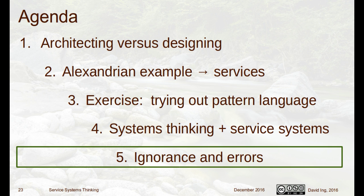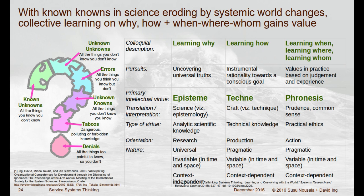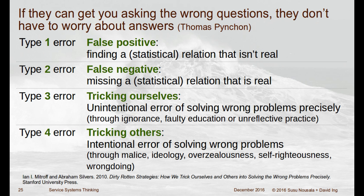We have about eight minutes left, so I'm going to skip ahead and talk about errors, because this is something I've learned very recently. Because if you're going to create a system or change a system, one of the things you're going to deal with is whether you're making a mistake. When you do an intervention, there's a possibility of making a mistake. It's good to make mistakes because you can learn from them. But there are different types of errors.